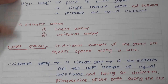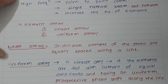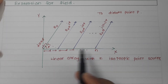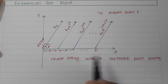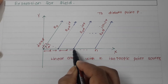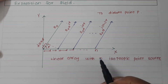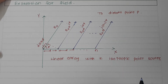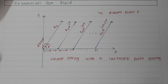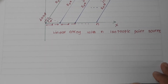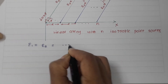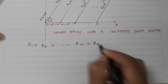Now let us talk about the expression for the far field. Assume there are N number of elements placed along the x-axis — element number one, element number two, element number three, and so on. Each succeeding element has a progressive phase shift of alpha. Since the current amplitudes are equal, the field magnitudes are equal: E1 = E2 = ... = En = E0.